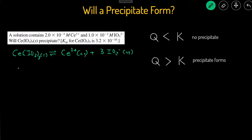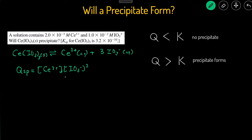Then we can set up the Qsp expression. Qsp is just the concentration of products divided by the concentration of reactants. So it's the concentration of Ce³⁺ times the concentration of IL₃⁻ cubed — the coefficients become the powers. The solid is on the reactant side, so we just write 1 on the bottom, or ignore it.